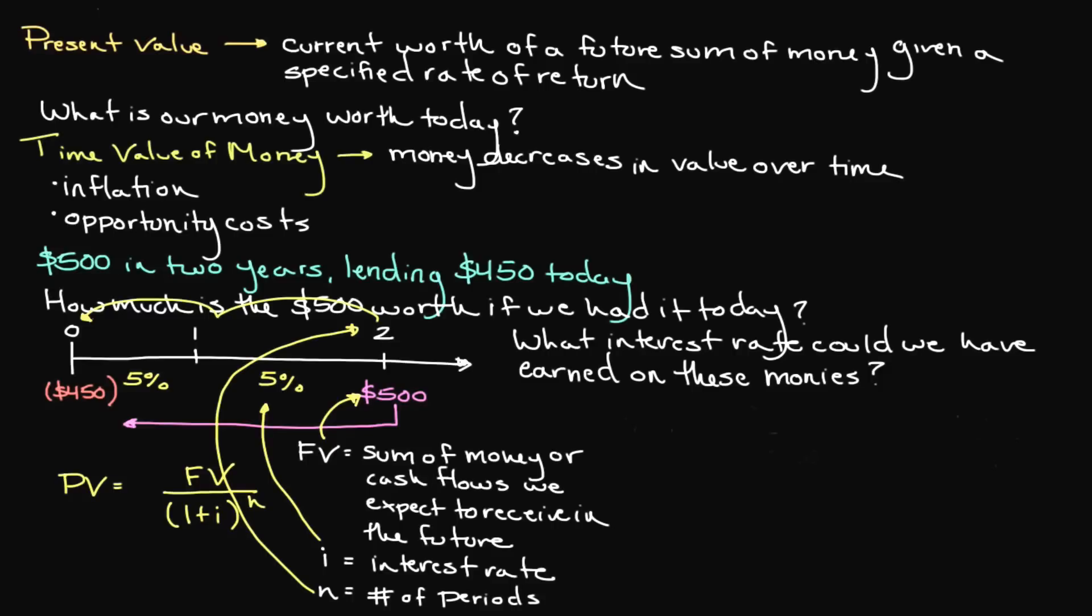Now that we understand the equation and have each of the required variables, we're ready to solve for the present value. First, let's plug our values into their respective variables. Directing our attention first to the denominator of our equation, we add 1 to 0.05 to get 1.05, and 1.05 squared equals 1.1025. Lastly, we divide our future value of 500 by 1.1025 to get $453.52 after rounding to the nearest hundredth.